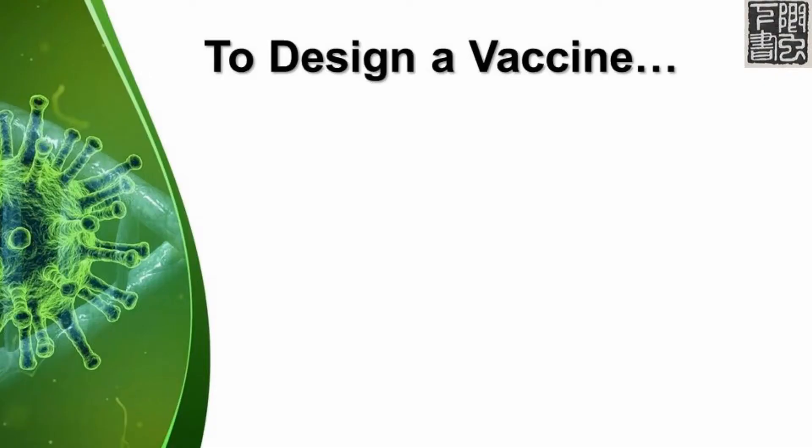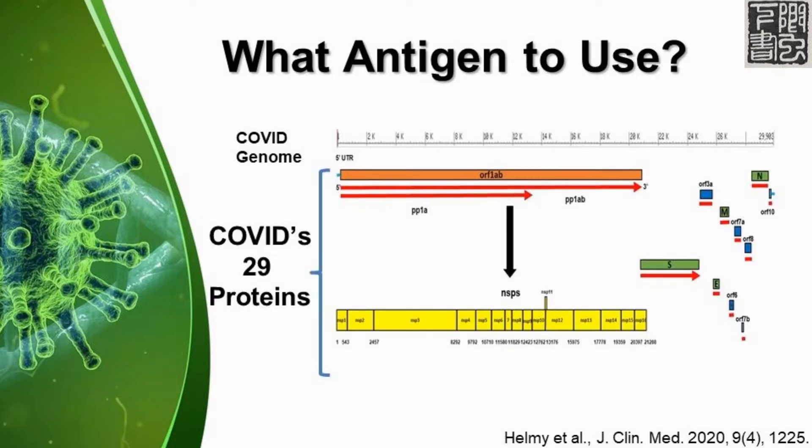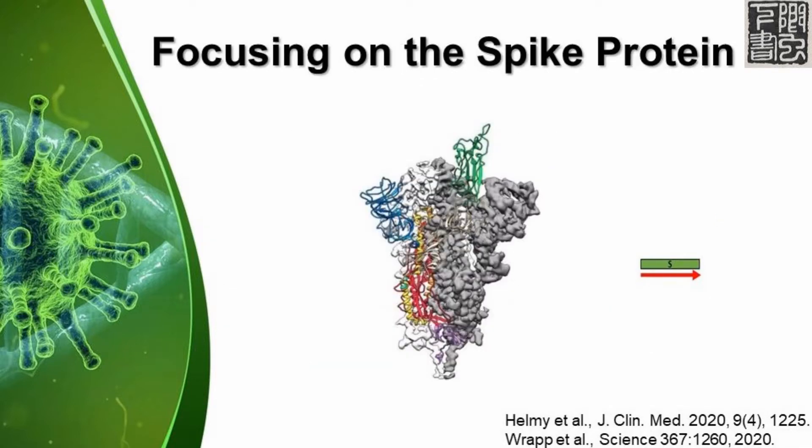All the COVID vaccines need to consider a few questions. First, which viral antigen should the vaccine use? COVID makes 29 proteins. Right now, most of the COVID vaccines in clinical trial focus on the spike or S protein. COVID uses the spike protein to dock onto a cell and then enter.